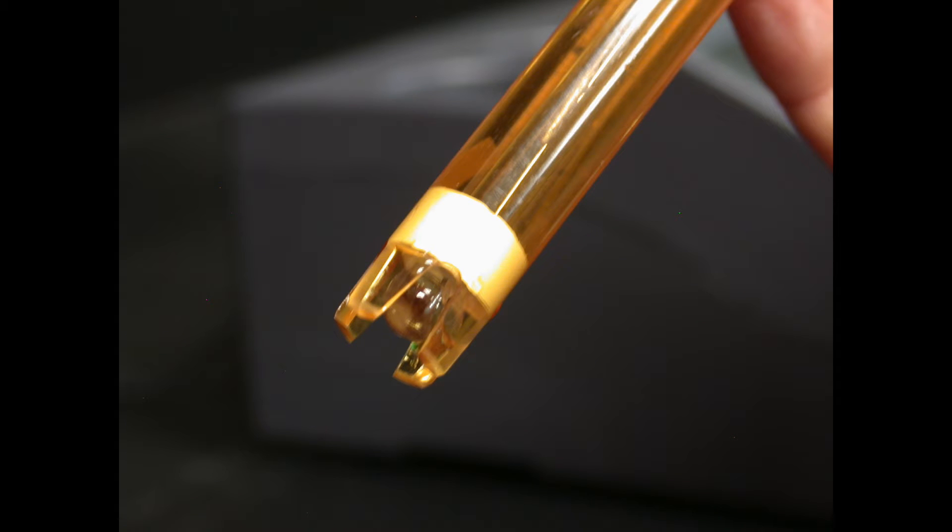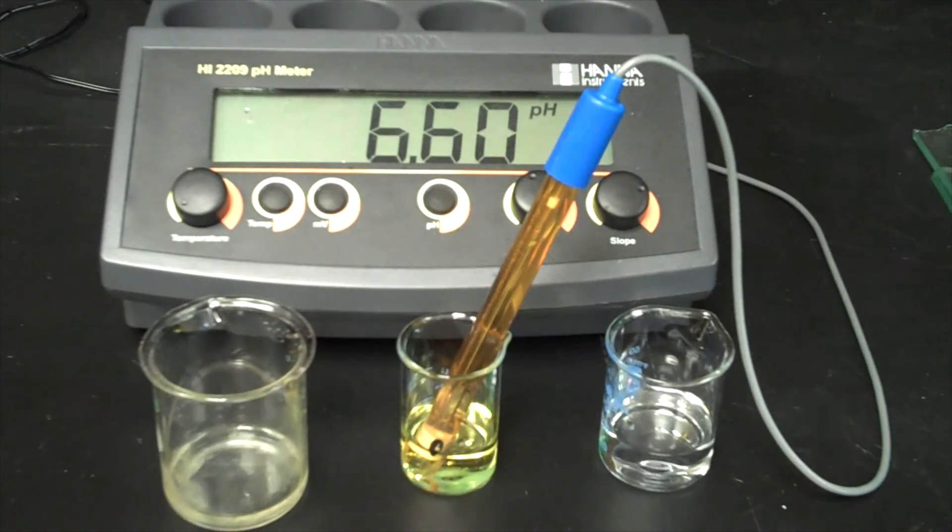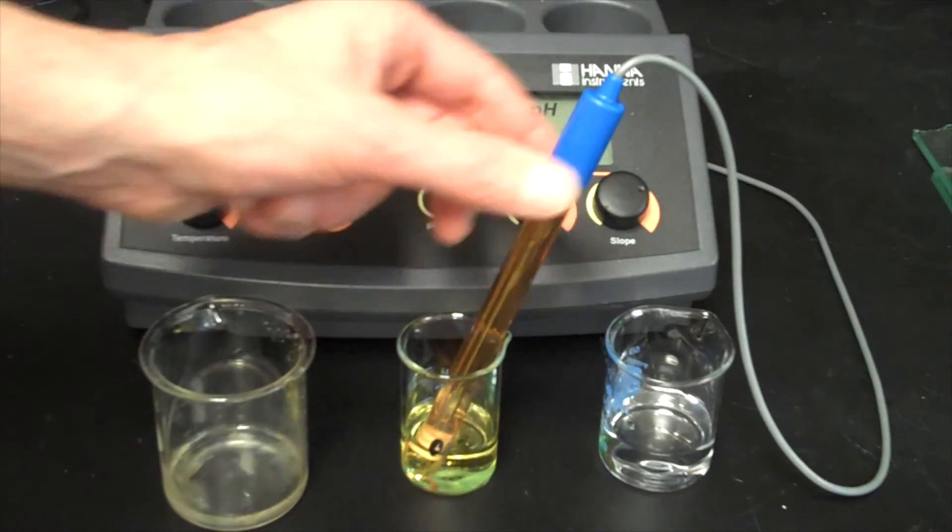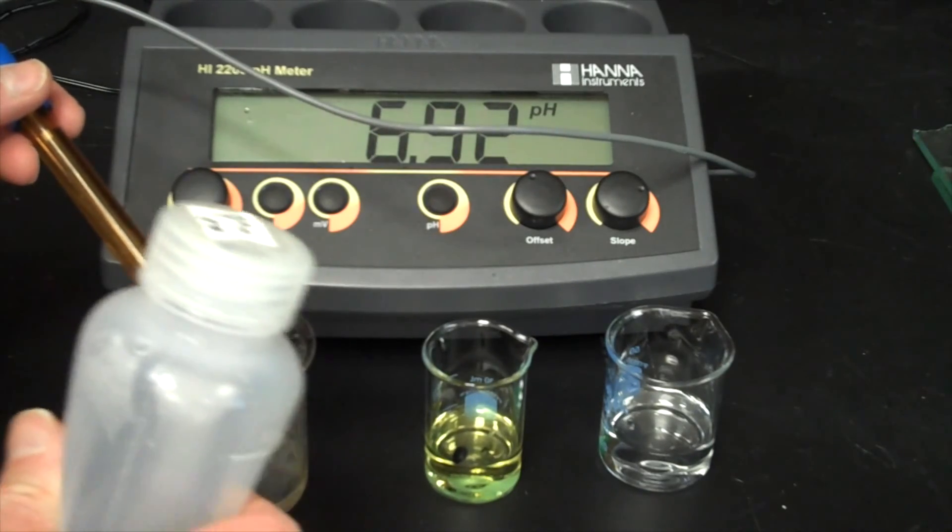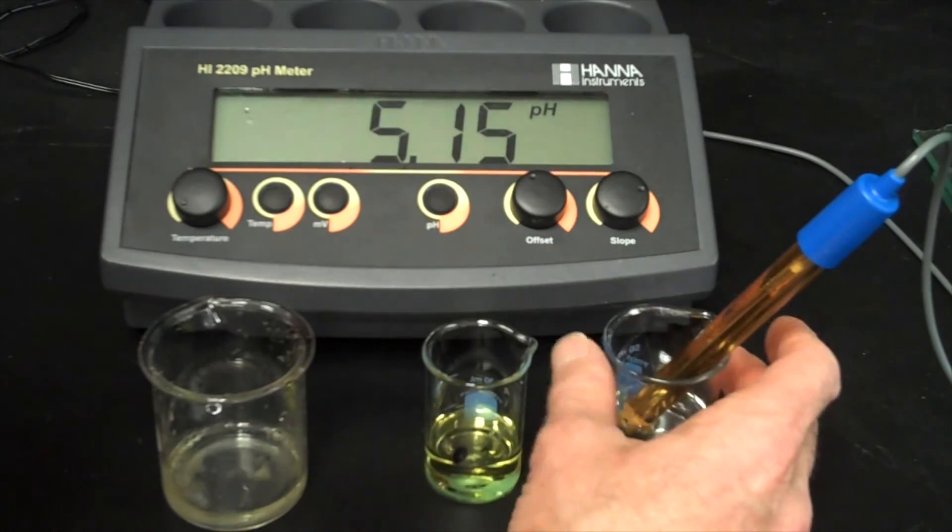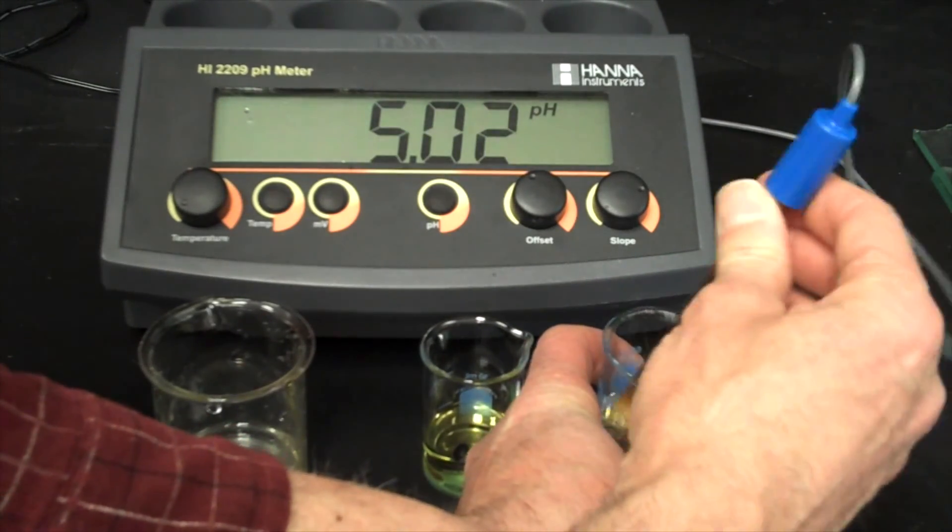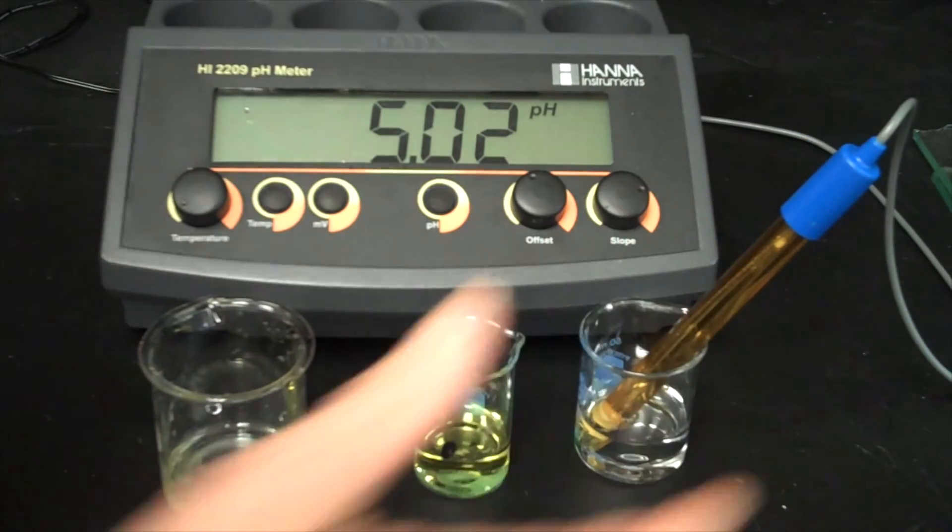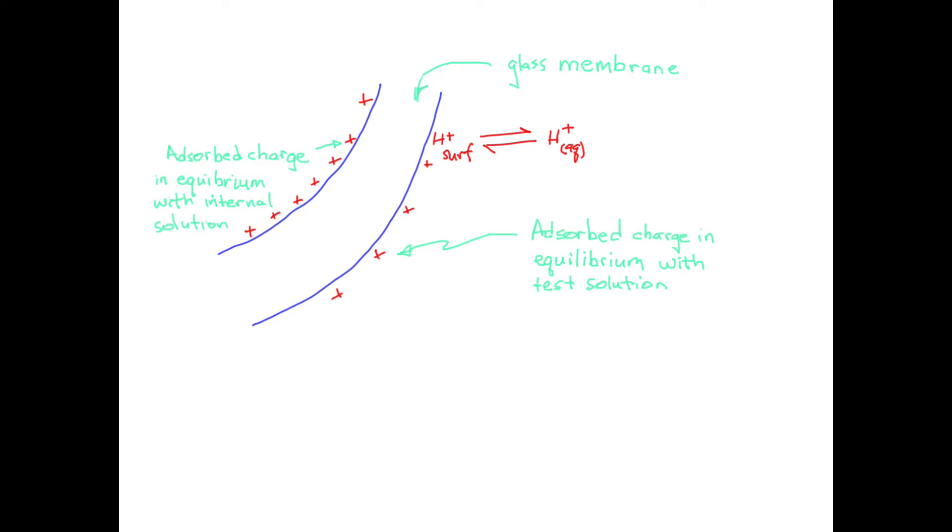You are probably already familiar with potentiometric methods of analysis. These would include measurements with pH electrodes and other ion-selective electrodes. With these types of devices, we insert a sensor along with a second electrode to complete the circuit into a sample solution and measure the voltage that develops at the sensor as ions in solution come into equilibrium with the surface of the device. A pH electrode uses selective adsorption of hydrogen ions onto the surface of a special glass membrane.